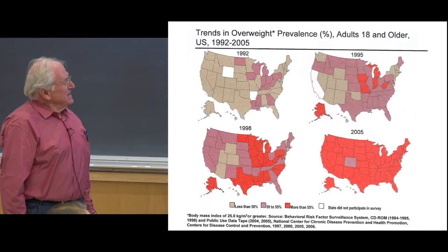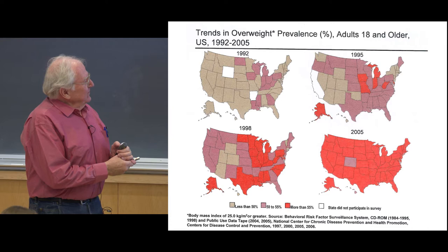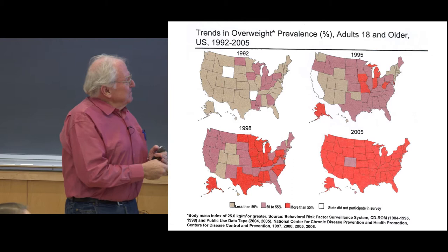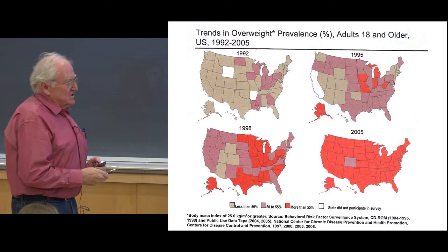Obesity didn't used to be a big problem. In 1992, the obesity incidence was certainly less than 50% in most states. But now in 2005, every state but Colorado and Hawaii has more than 55% of the adult population obese.